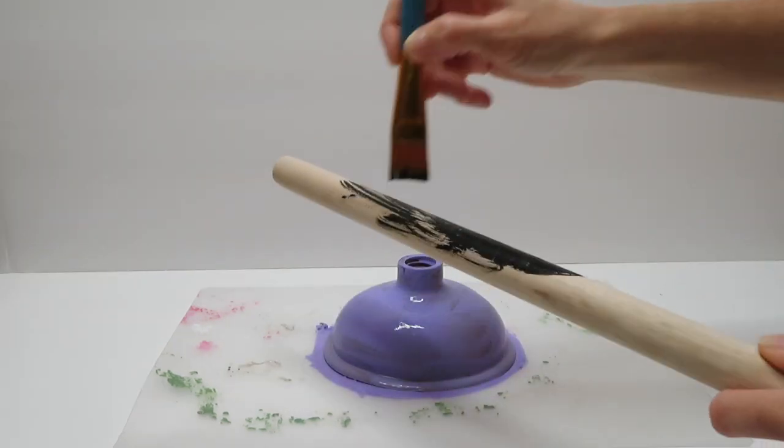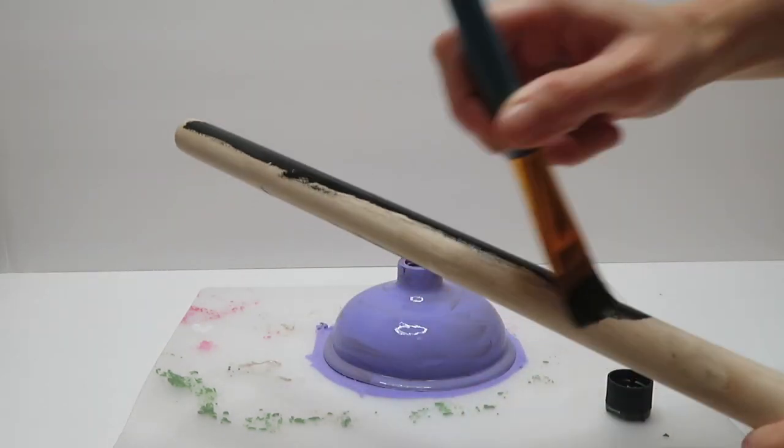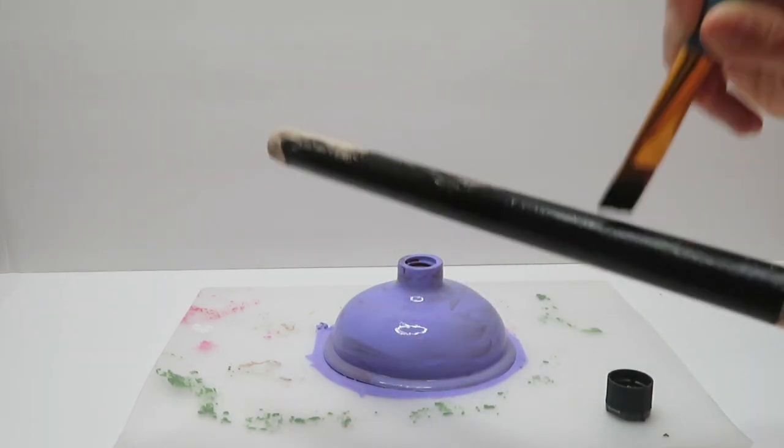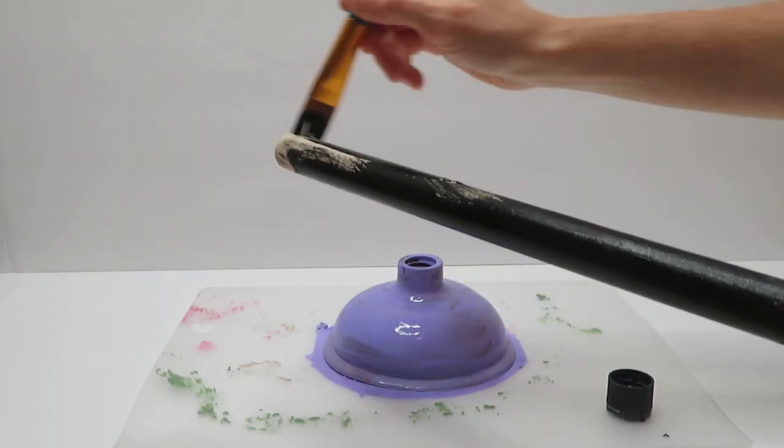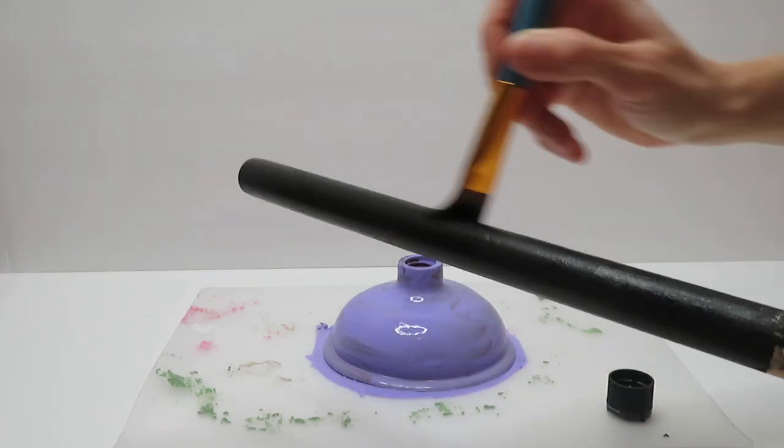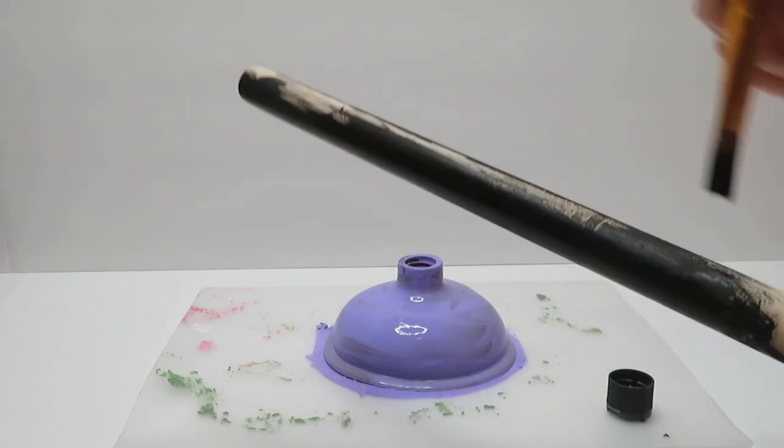There was some residue left over, so I went ahead and took some sandpaper to it. It was super simple and didn't take long at all. You're going to want to paint the stick of the plunger. I chose to paint mine black, which I think personally looks best, but of course you can use whatever color you like.